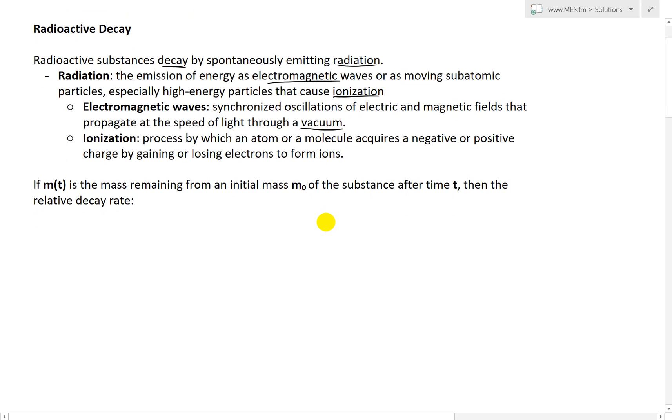That's in a closed system. Ionization is the process by which an atom or molecule acquires a negative or positive charge by gaining or losing electrons to form ions.